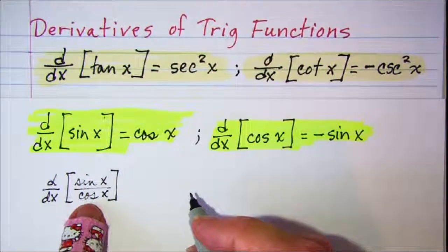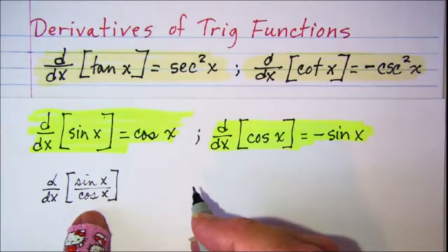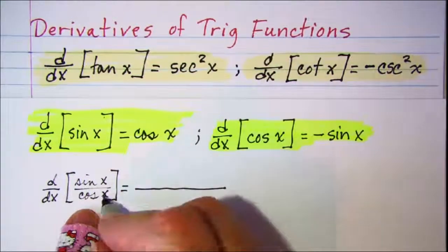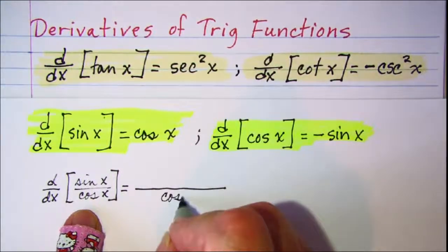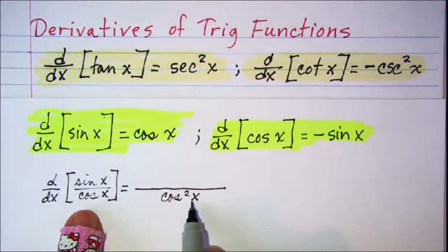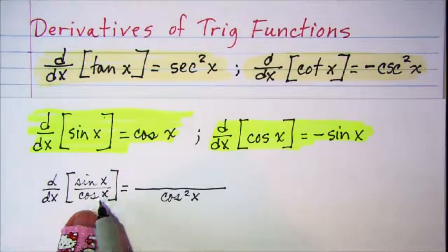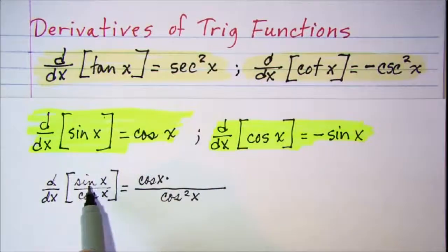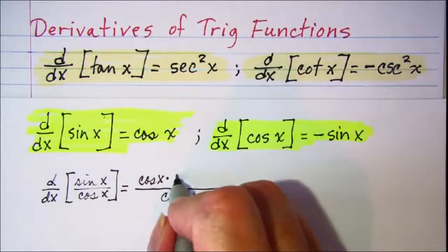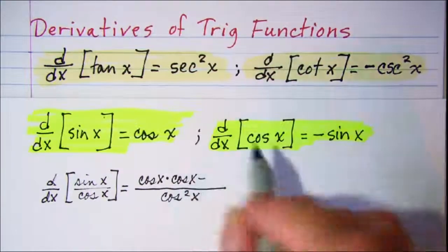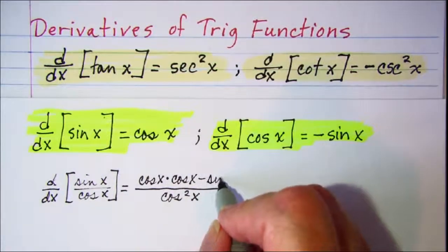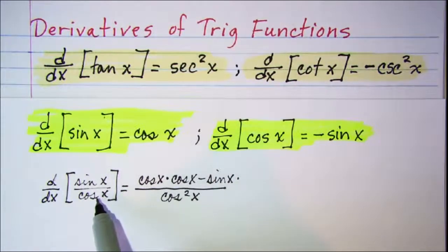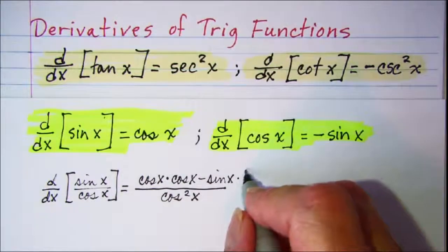To find this derivative we need to use the quotient rule. Cosine squared x will be in the denominator, and then we start with the denominator: cosine x times the derivative of the numerator, which is cosine x, minus the numerator, which is sine x, times the derivative of the denominator. The derivative of cosine x is negative sine x.